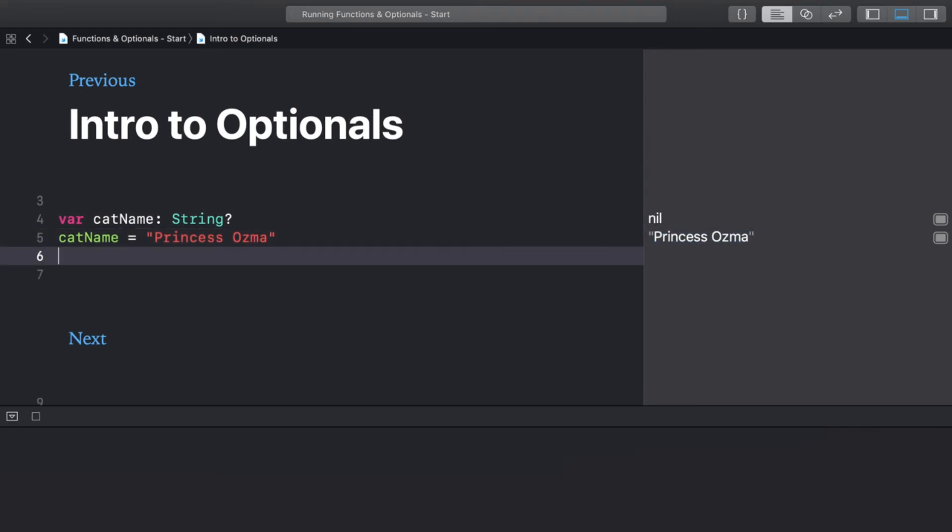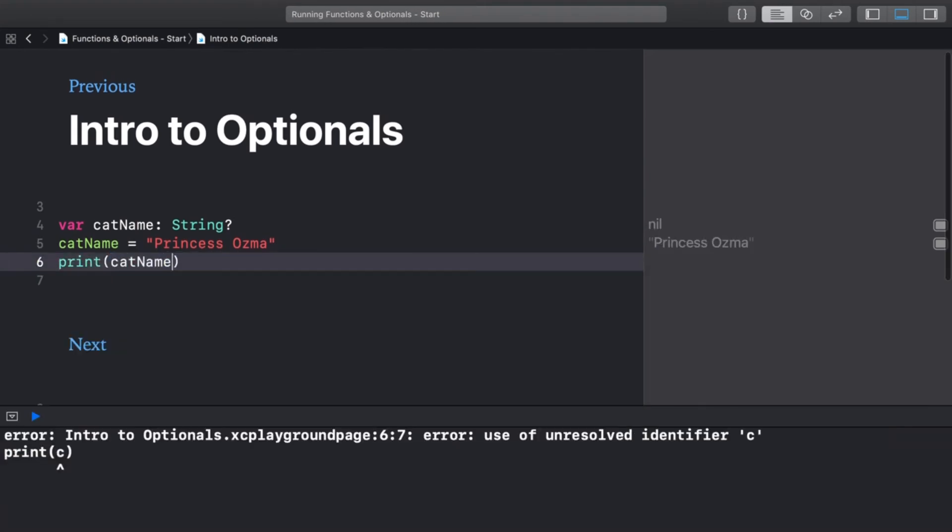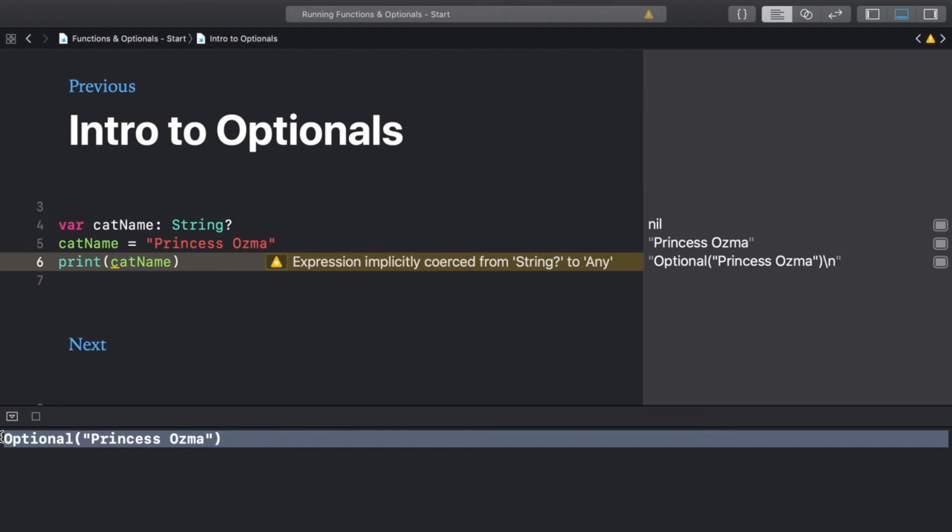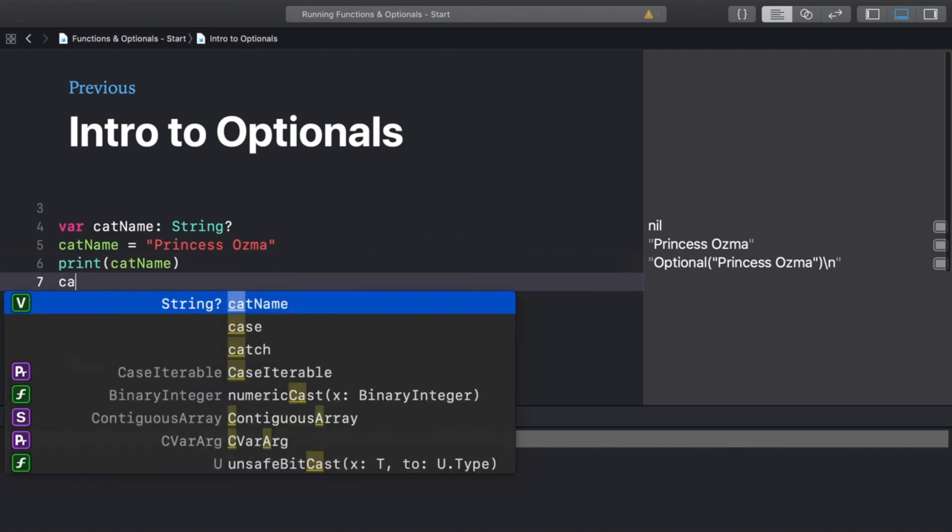But if you try to print out the value, you see Optional Princess Ozma in the console. That's because the value is still wrapped up inside the Optional. We'll get into how to unwrap Optionals in another video, but first, how do we change an Optional back to having no value? To set an Optional back to nil, just use the keyword nil instead of a value.